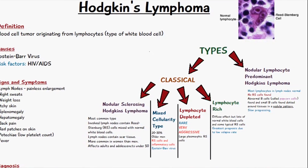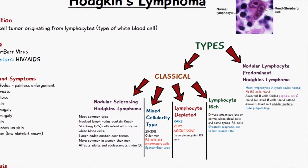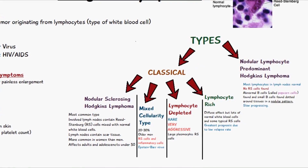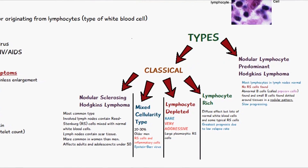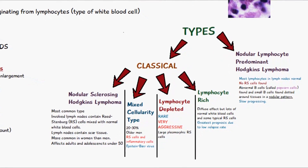There are two groups of Hodgkin's lymphoma: the classical type and the nodular lymphocyte predominant Hodgkin's lymphoma.